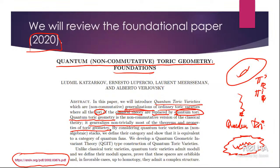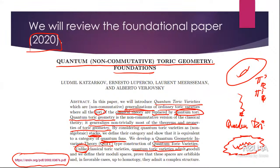We will be mostly considering these quantum toric varieties as stacks, and we will have quantum fans rather than ordinary fans, as well as quantum geometric invariant theory. Unlike classical toric varieties, quantum toric varieties admit moduli — there is a moduli space of toric varieties. This moduli space didn't exist in the classical case.